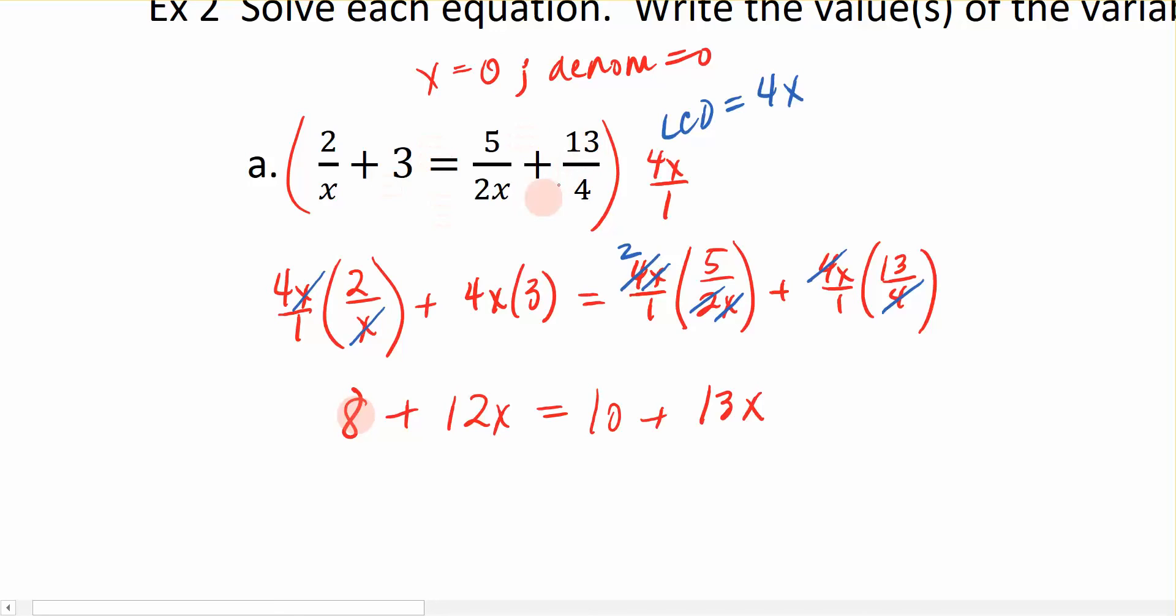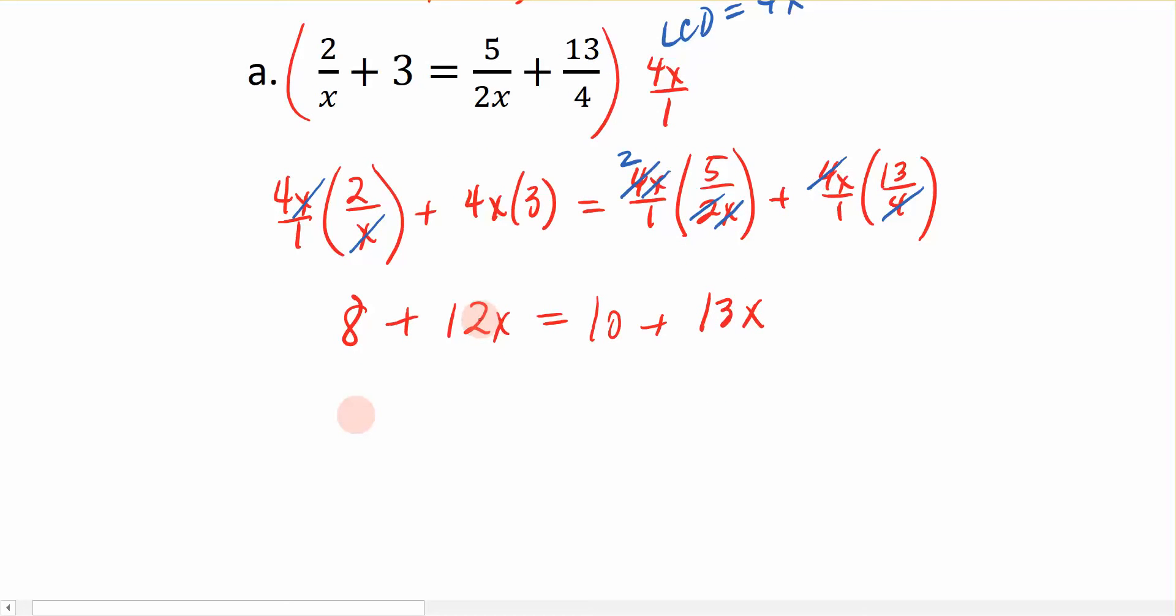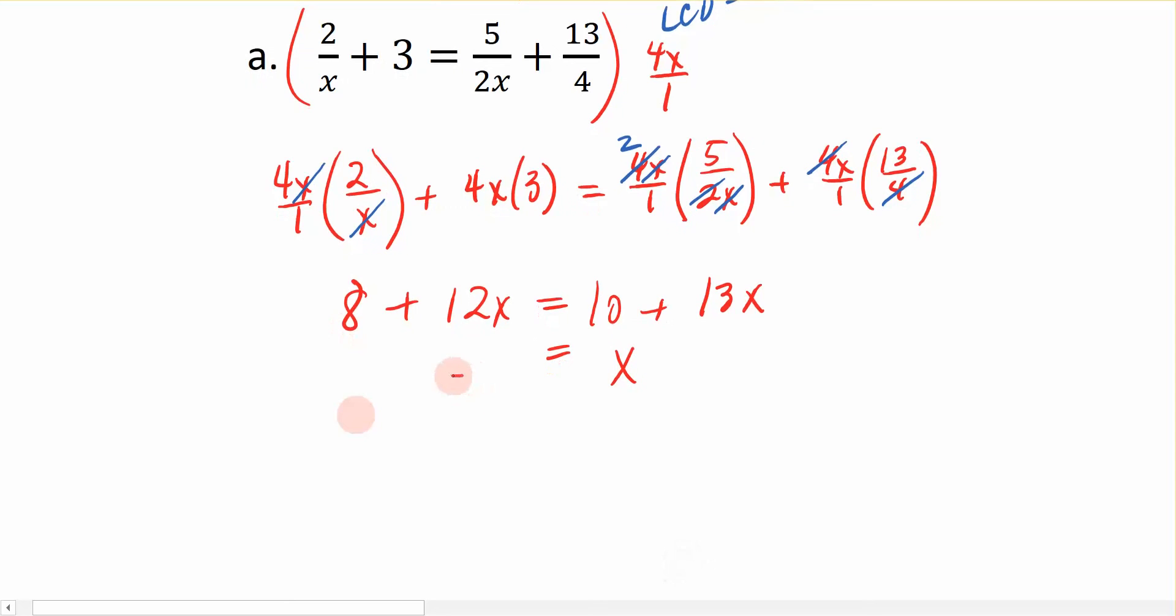So we went from this nasty, fractional, rational equation up here to something that's a little bit more workable down here with all whole numbers. I'm going to gather my variables up this time on the right-hand side by subtracting 12x to the right. That's going to be 12x from 13x would just be x. Now I'm going to take this 10, and I'm going to subtract it to the left. So I'm going to subtract 10 from this side and subtract it from here, and that gives me a negative 2. So the answer to this rational equation right here is just x is equal to negative 2.